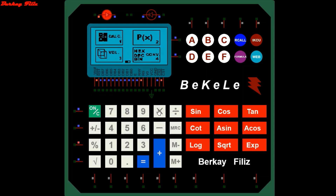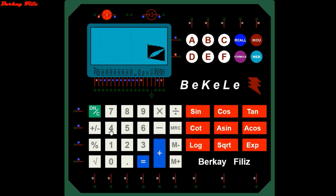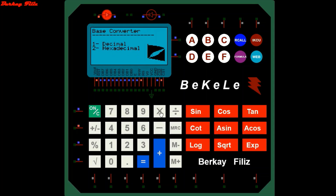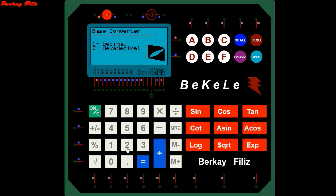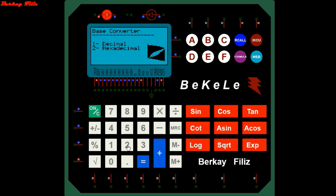Let's leave this section and enter the base transformation section. The base conversion section is where hexadecimal and decimal numbers are converted to each other. We select the option we want to convert, enter the value, and the conversion value appears on the screen. It currently prints results up to 5-digit values.